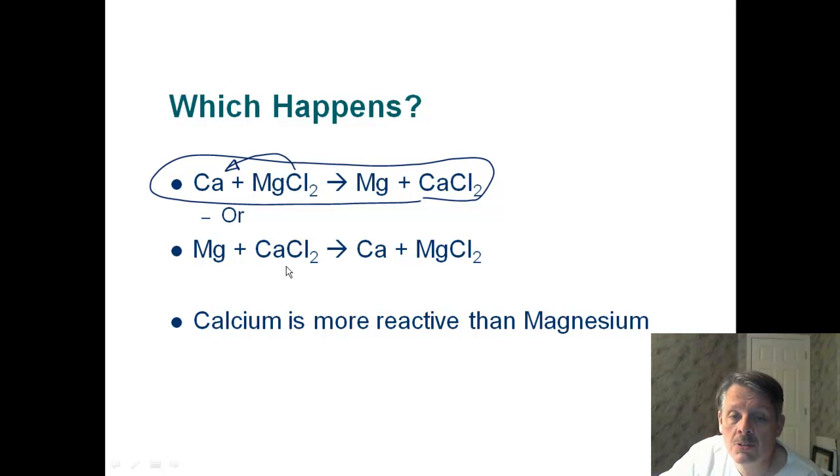Down here, this reaction, chlorine's already with calcium, so you throw some magnesium in there, and chlorine says, I don't want magnesium. I'm happier with calcium. I'm going to stay with what I have. So no reaction happens here. You can throw magnesium in there all you want, and the calcium chloride is going to stay together.